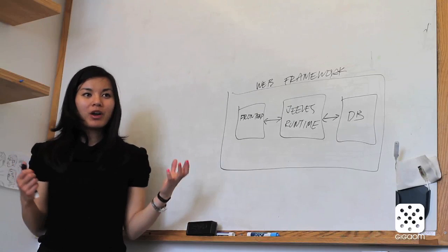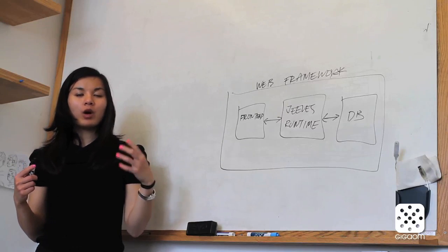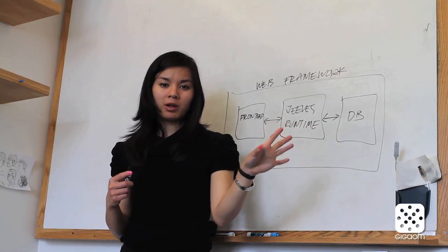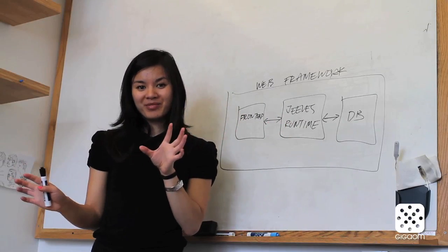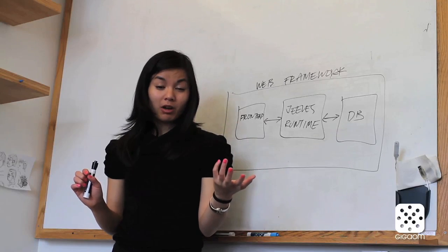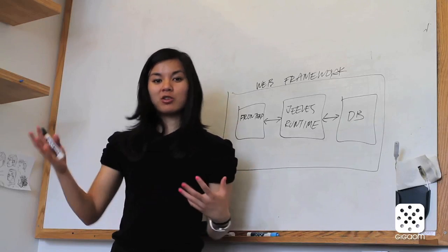And so what I leave you with is the question of how would you write your programs if you could separate the policy problem from the functionality problem? And what sorts of systems could you build if you thought about things with this new paradigm?